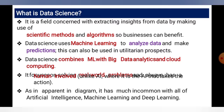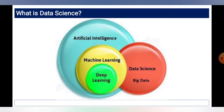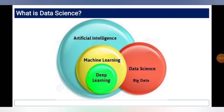As apparent in the diagram, data science has much in common with artificial intelligence, machine learning, and deep learning. In the diagram, artificial intelligence is represented by a large blue circle, machine learning is a smaller yellow circle inside it, and deep learning is a green circle inside that.